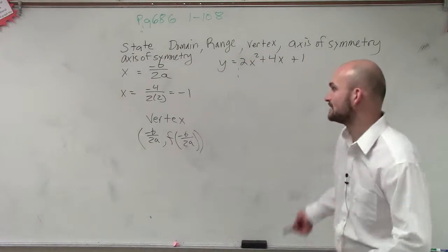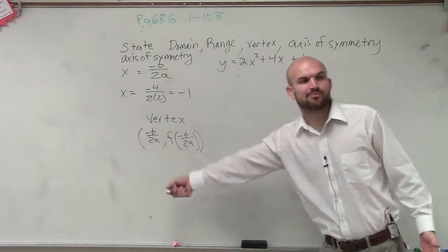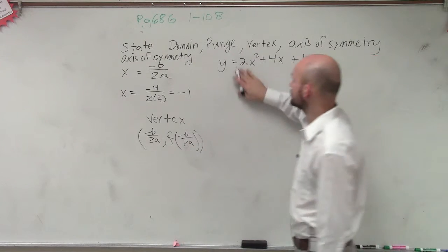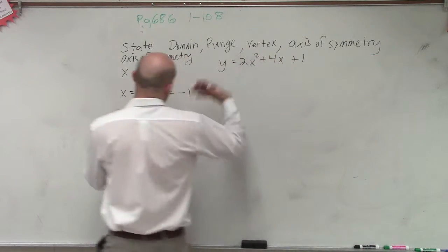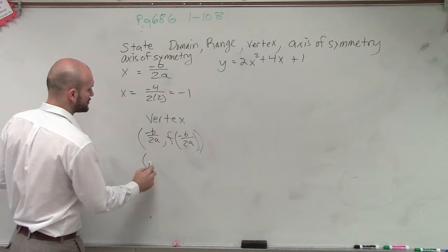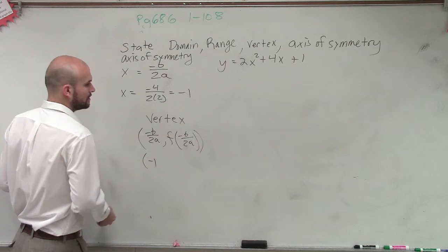So then what we do is find out what the axis of symmetry is, and then we plug that into our function. In this case, we already know that the axis of symmetry is negative 1.